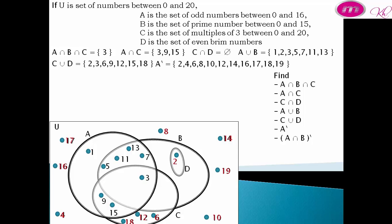Complement of A intersect B equals {1, 2, 4, 6, 8, 9, 10, 11, 14, 15, 16, 17, 18, 19}.